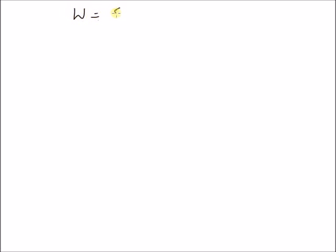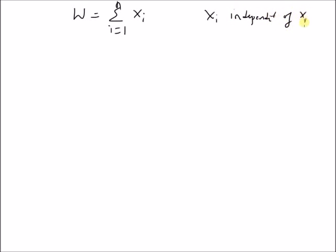So let us define a random variable W which is the sum of n independent random variables x_i, where x_i is independent of x_j when i is not equal to j.